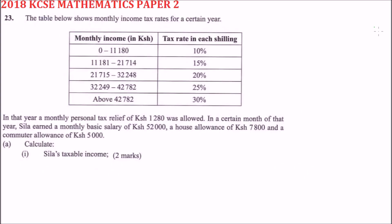Question number 23. We are told the table shows monthly income tax rates for a certain year. For the first bracket, from zero to eleven thousand one hundred and eighty, you are taxed at the rate of ten percent. This means you calculate the tax as ten percent of that amount, then move to the second bracket which is fifteen percent.